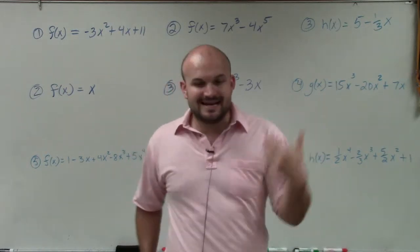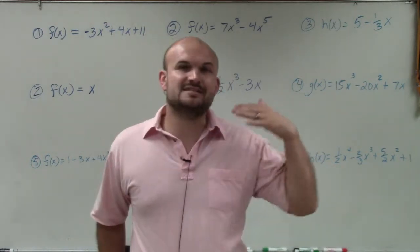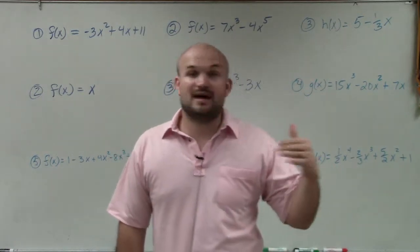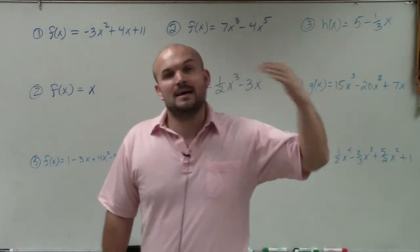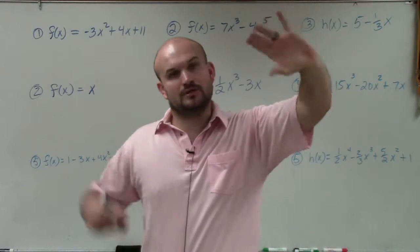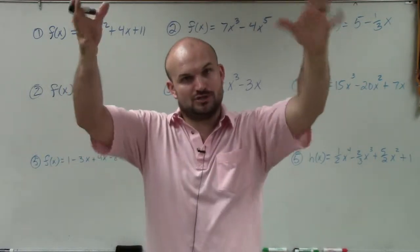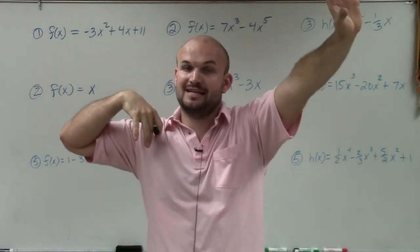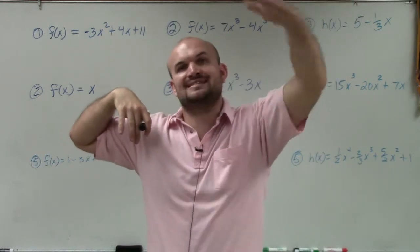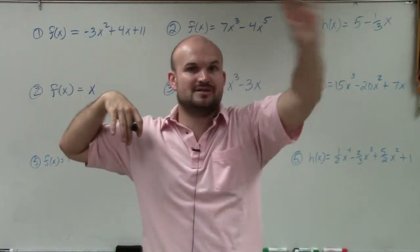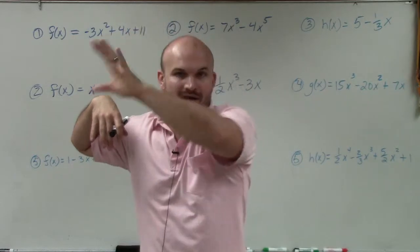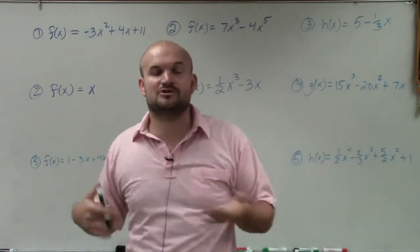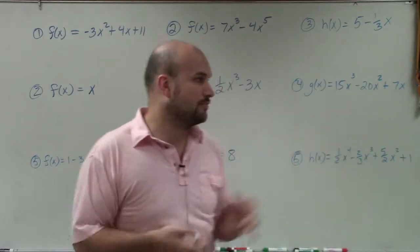When identifying the leading coefficient and degree, it is very, very important to make sure that we have our polynomials in descending power form, meaning that the highest power — the largest exponent — is going to be in front in your leading term, and then you go in descending order. That means the largest power first, then the next largest power, going all the way down to the smallest, or to our constant, which would be your variable to the zero power.